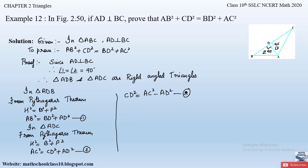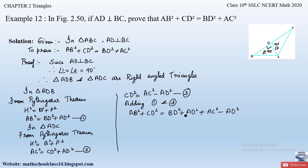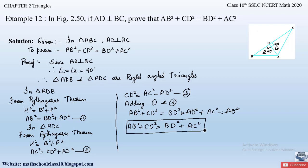Now adding equations 1 and 3: the left-hand side gives AB² + CD². The right-hand side from equation 1 is BD² + AD², and from equation 3 is AC² − AD². Here, +AD² and −AD² cancel each other. Therefore, AB² + CD² = BD² + AC², which is what we had to prove.